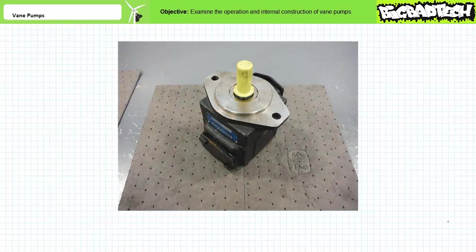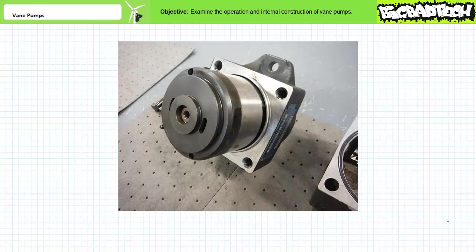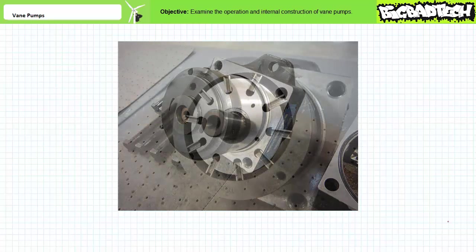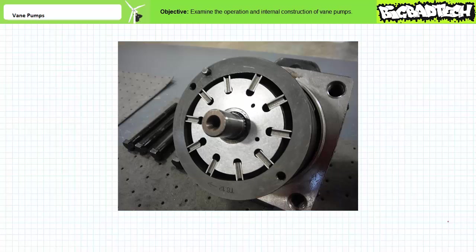Now let's examine the internal construction of a balanced vane pump. Removing the bottom housing, we find something known as a cartridge — the rotor and vanes packaged inside the elliptical cam ring and capped off with port plates. A cartridge assembly makes repair and replacement of a vane pump an extremely simple task. The system can be locked out and tagged out, the old cartridge assembly removed, and a new one mounted in place, all without the ever-present possibility of dropping a vane down a floor drain. Additionally, different sized rotor and cam rings allow the same pump to provide different displacement values per revolution. Removing the rear port plate, we see a rotor with vanes inside an elliptical cam ring.